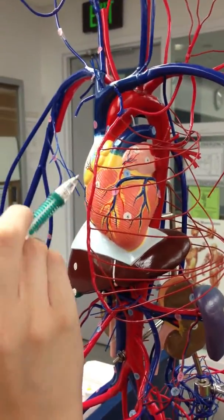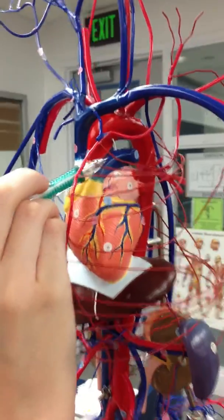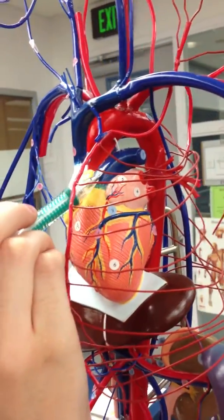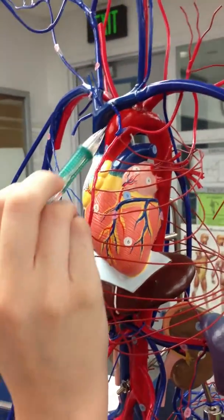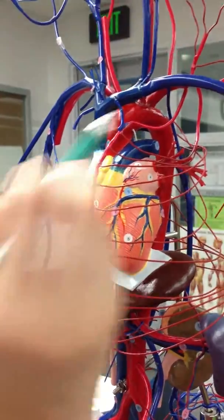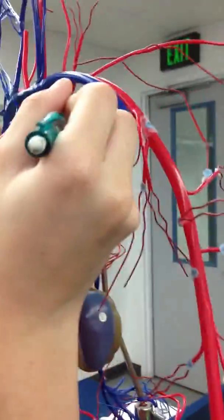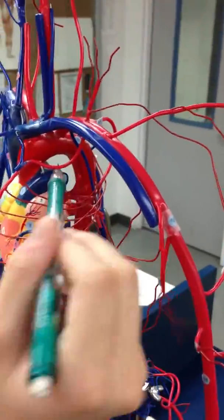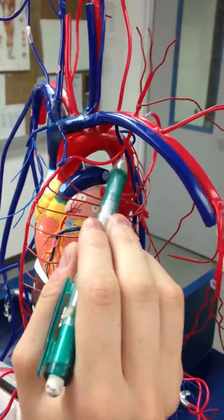The pulmonary trunk is number 1 here, and the ascending aorta is number 5, the arch of aorta is here and around, which is number 6.